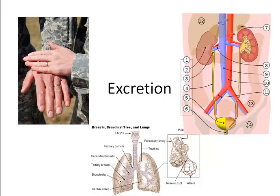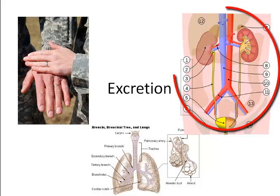Excretion is the process by which waste products of metabolism and other non-useful materials are eliminated from an organism. In vertebrates, this is primarily carried out by the lungs, kidneys, and skin. We'll focus on excretion of nitrogenous wastes from the kidneys.